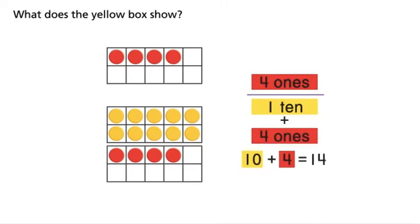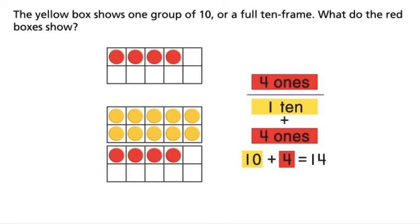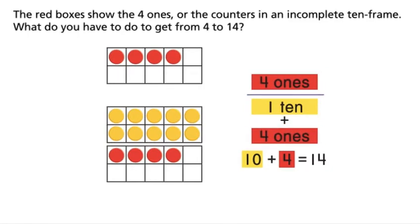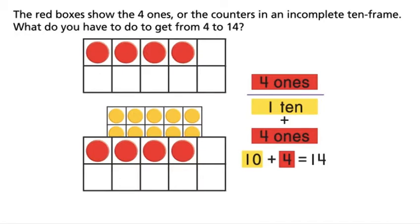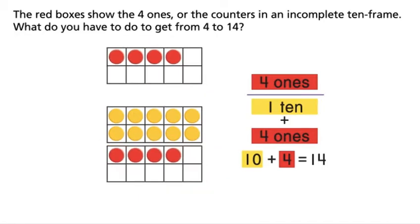What does the yellow box show? The yellow box shows one group of 10, or a full 10-frame. What do the red boxes show? The red boxes show the four 1s, or the counters in an incomplete 10-frame.